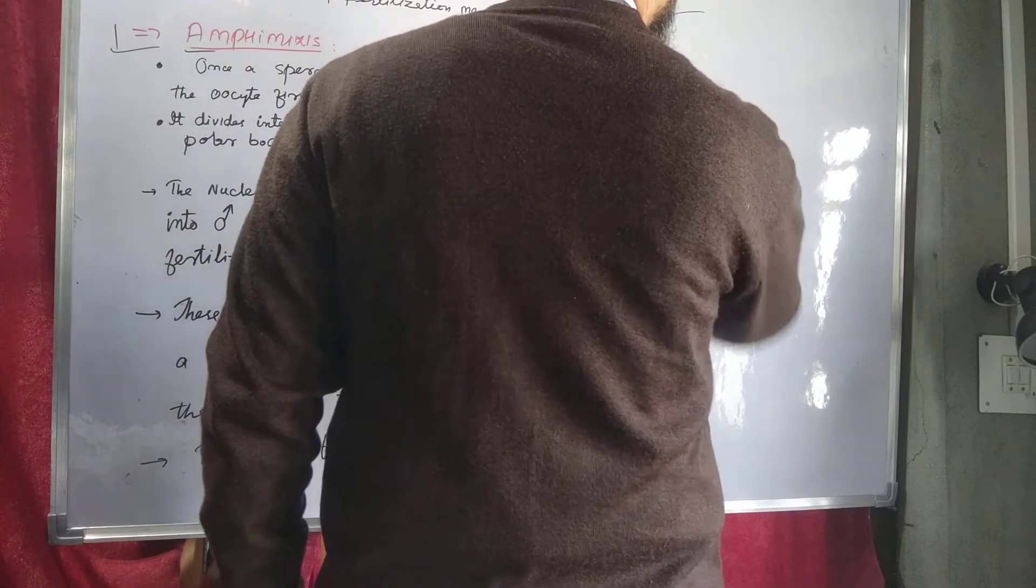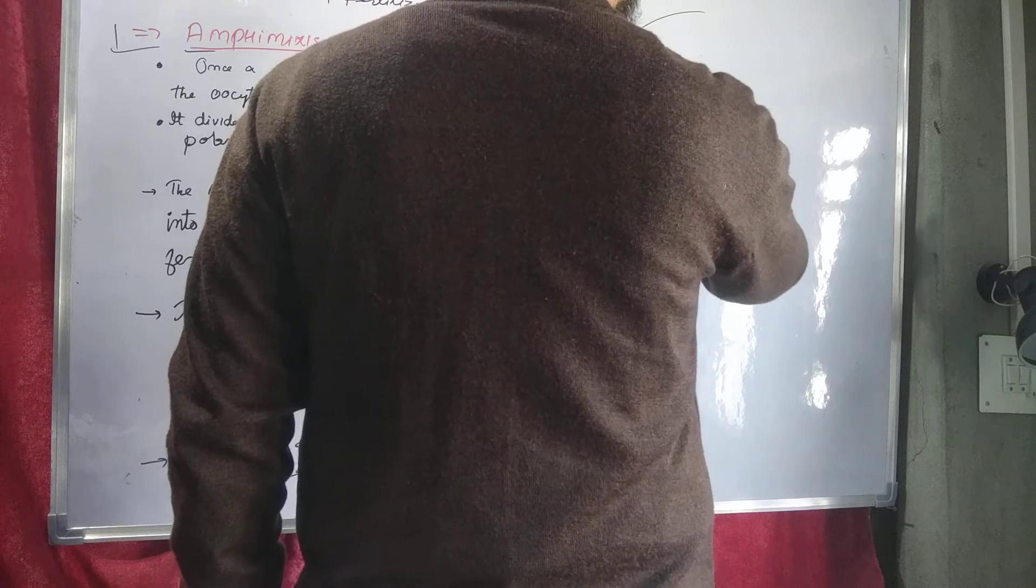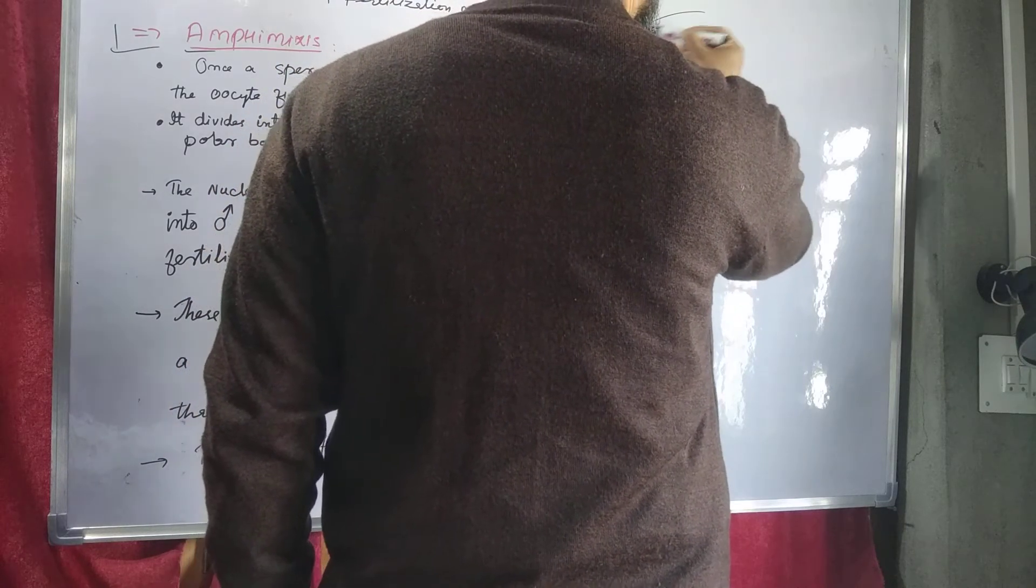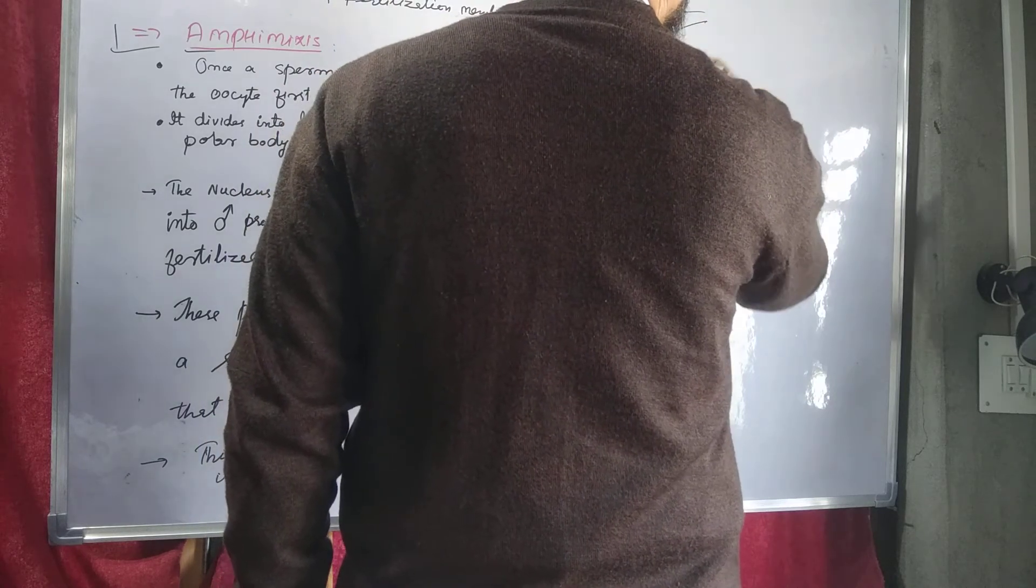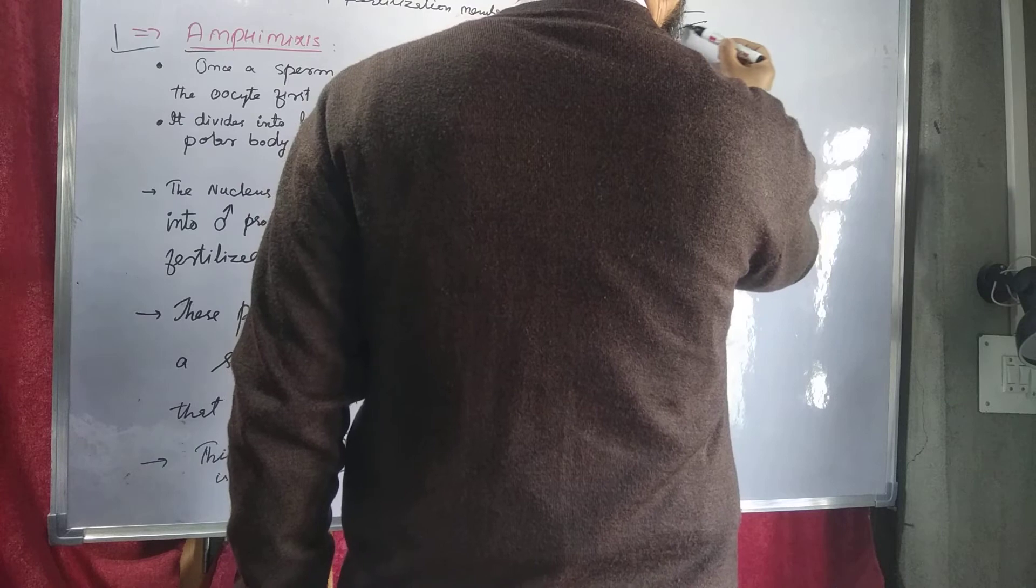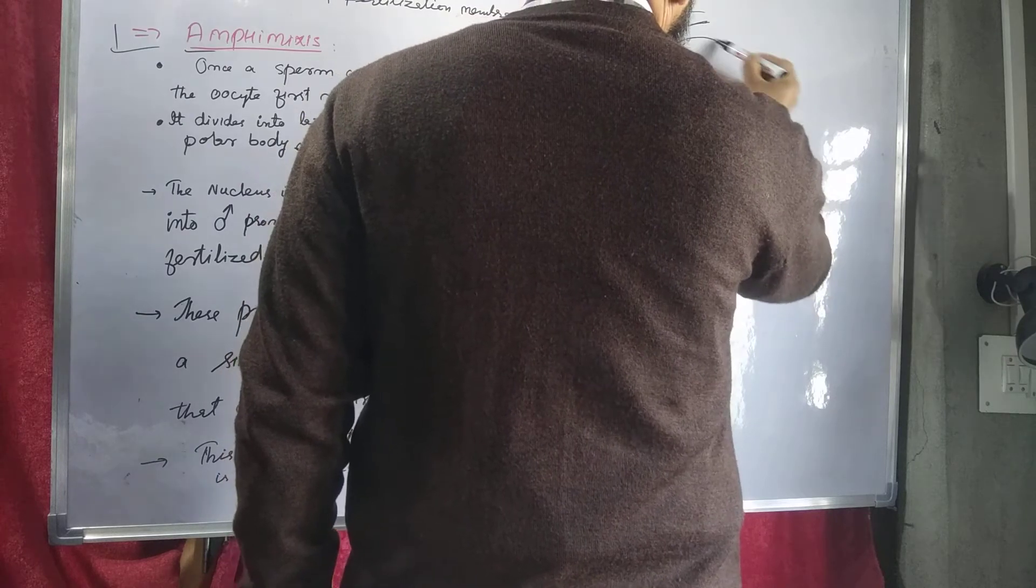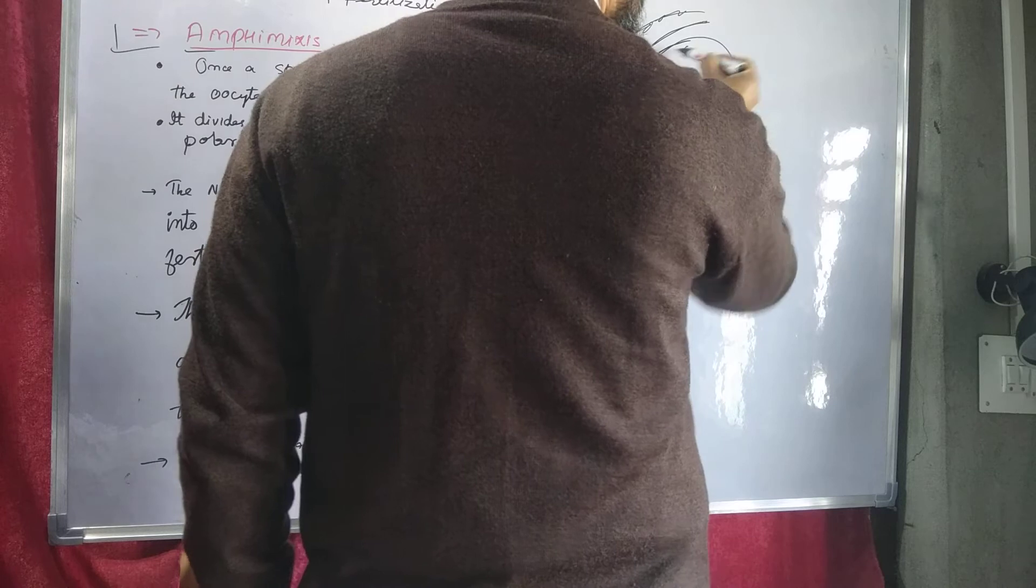We have known that this is a secondary oocyte. Suppose this is a corona radiata. This is zona pellucida. Okay? This is a secondary oocyte. This is a plasma membrane.